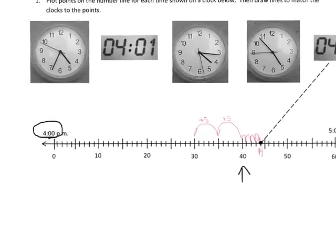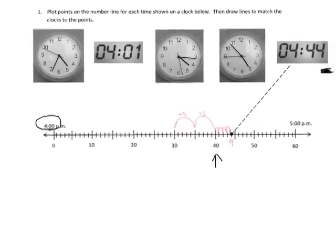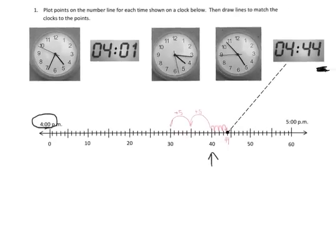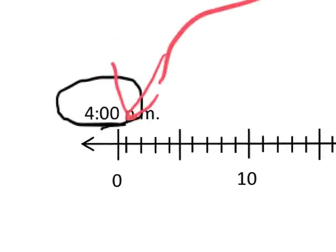Using that same idea for 4:01 — 4:01 means we're going to go way over here, and I have to zoom in at that point, because there's 4 o'clock right here on this line, so 4:01 means we're going to go one space over, and that's 4:01.